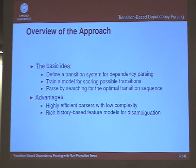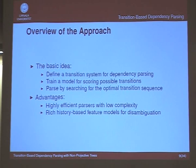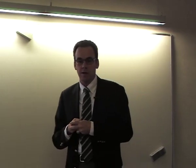This approach can be implemented very efficiently with typically linear complexity — parsing time grows only linearly with sentence length, whereas most natural language parsers are at least cubic. It also allows rich history-based feature models where information from the entire parse history can be used in deciding what to do next, which turns out to be a powerful idea for disambiguation during parsing.